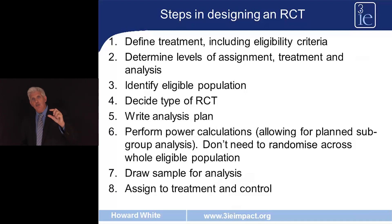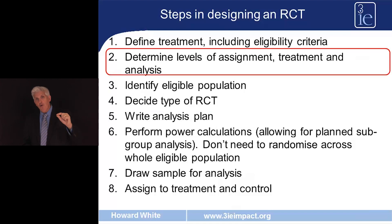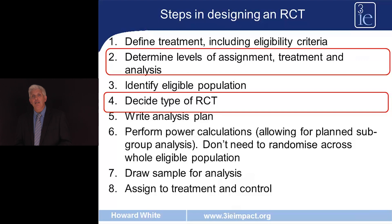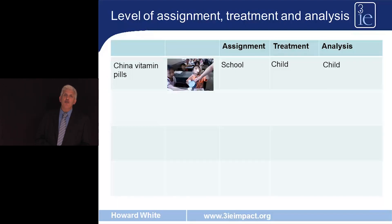I'm going to focus on two of these eight steps: assignment, treatment, and analysis; and the different types of RCT design. The unit of assignment is the level at which we randomly assign the intervention — this could be districts or schools. The unit of treatment is the level at which the treatment is delivered, and the unit of analysis is the level at which we analyse the outcomes of interest.